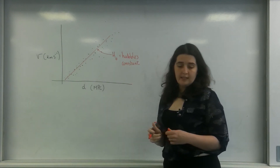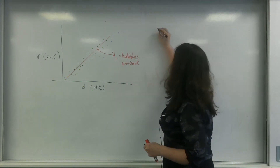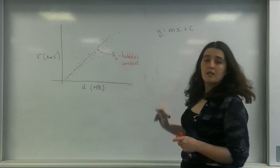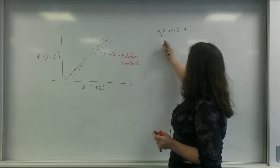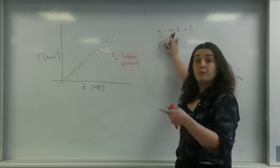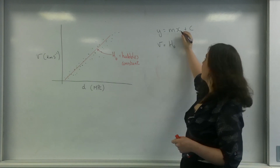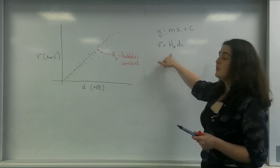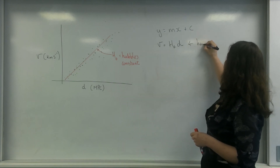This is a straight line I've drawn, so the equation for a straight line is y = mx + c. Well, c is 0 because it goes through the intercept. So I've got y, which is velocity, equals my gradient — which is Hubble's constant — times by the thing on the x-axis, which is d. So this is known as Hubble's Law.